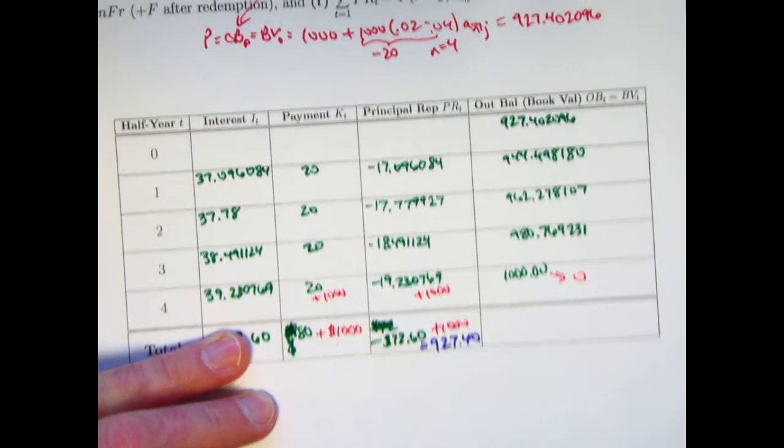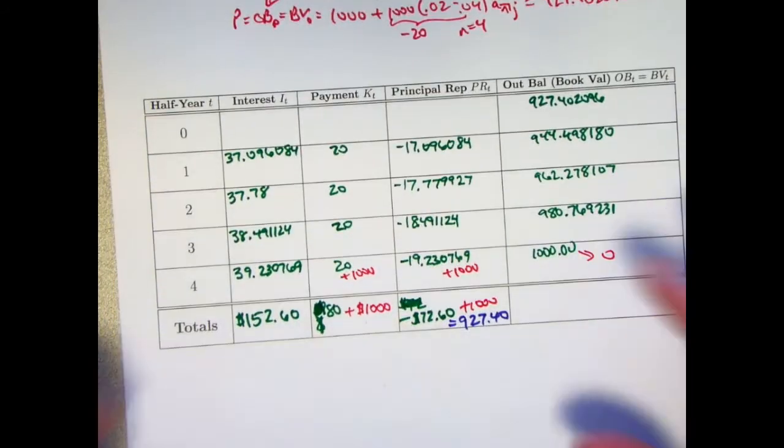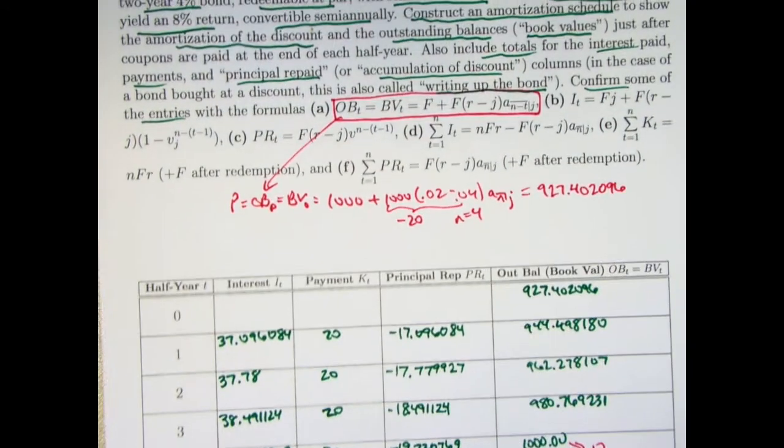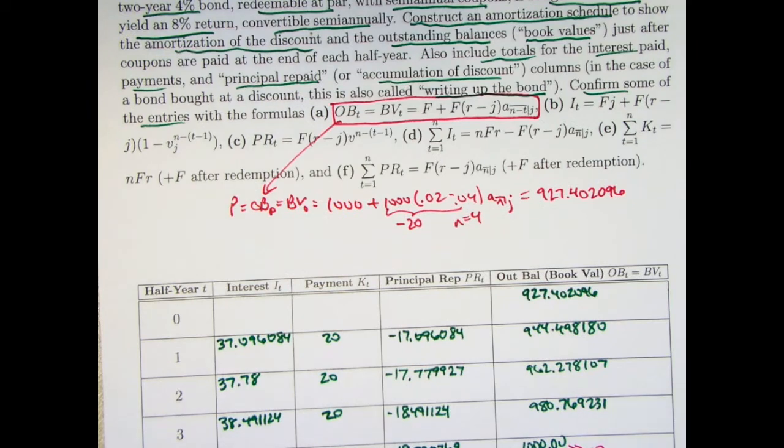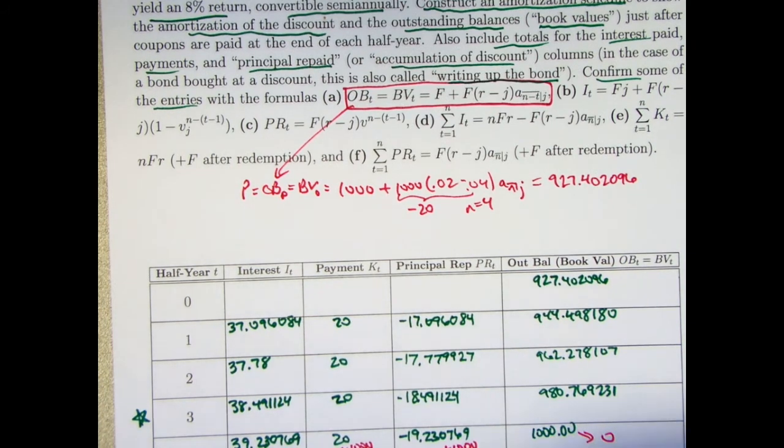In the end, you get 927.40. Which, if you think about it, should make sense. That is the same as the price that you paid for the bond and you repaid the principal. All right, so that's the totals. Now, let's go ahead and check some of these things that we see here.